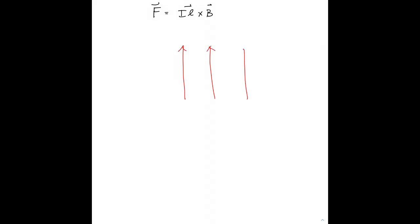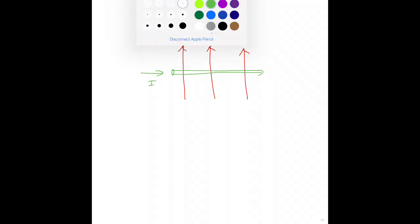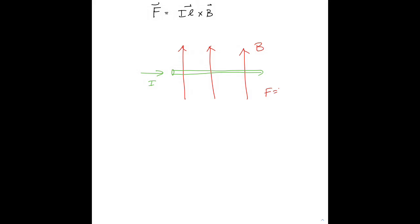Here's a quick question regarding F equals IL cross B. What if we had a magnetic field that pointed toward the top of the page and a segment of wire pointed horizontal, and current flows to the right? Can you figure out what the direction of force is? The force should be out of the page. If your thumb of your right hand points to the right and your fingers point toward the top of the page, then your palm is facing you, which would be a force out of the page.